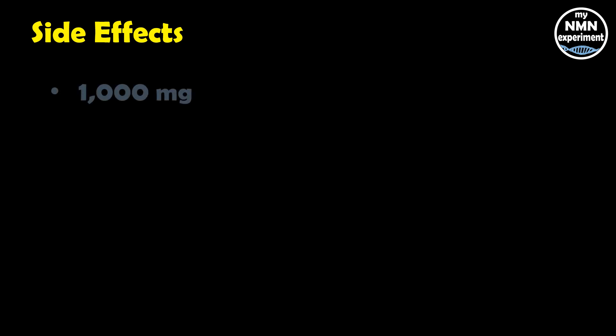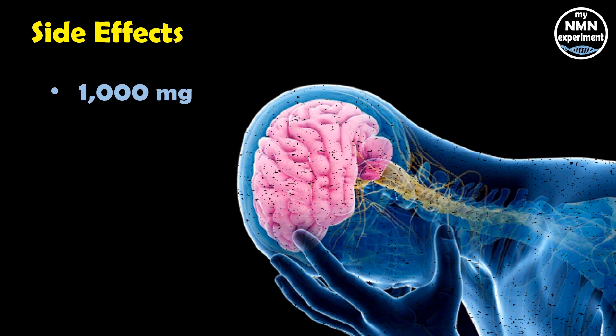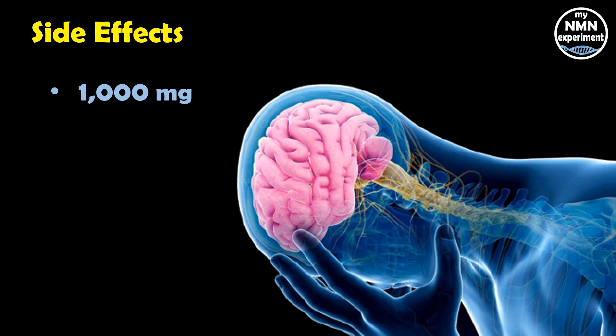Since quercetin is found naturally in many fruits and vegetables, it's deemed to be fairly safe — generally there are little to no side effects. However, in some instances taking more than 1,000 milligrams per day may cause mild symptoms such as headaches, stomach aches, and/or tingling sensations.